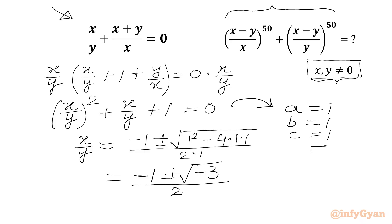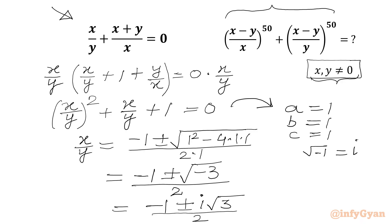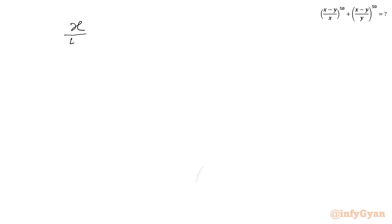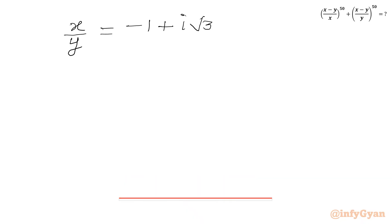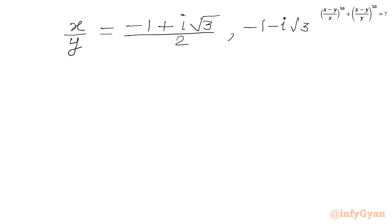We know that the square root of negative 1 is the complex number i, so this becomes minus 1 plus or minus i times root 3 over 2. Therefore x/y equals (minus 1 + i√3)/2 or (minus 1 − i√3)/2. These are the cube roots of unity, so one solution for x/y is omega and the second is omega squared.